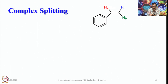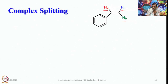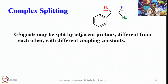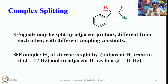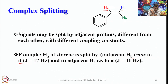Now let us look into complex splitting. Consider the styrene molecule: three vinyl protons designated Ha, Hb, and Hc. Ha is cis to Hc whereas it is trans to Hb. As a result, although Hb and Hc appear chemically equivalent, they are not magnetically equivalent. When two protons on the same carbon are chemically equivalent but not magnetically equivalent, we encounter complex splitting.